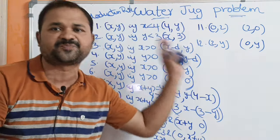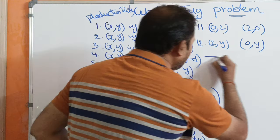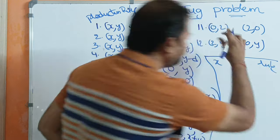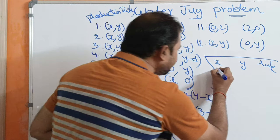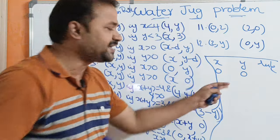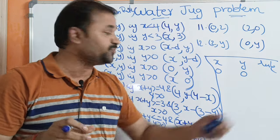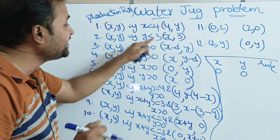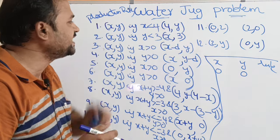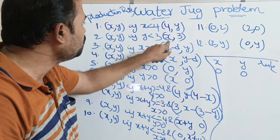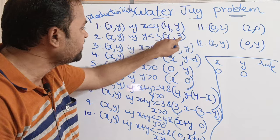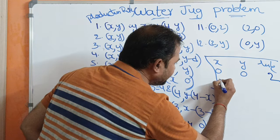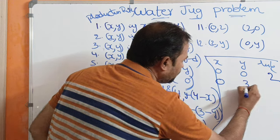Now let us solve the problem using these 12 production rules. The initial state is (0, 0) — the 4-liter jug has 0 and the 3-liter jug has 0. We apply the second rule: y is less than 3 (0 < 3), condition is true, so we completely fill the 3-liter jug. The new state is (0, 3).